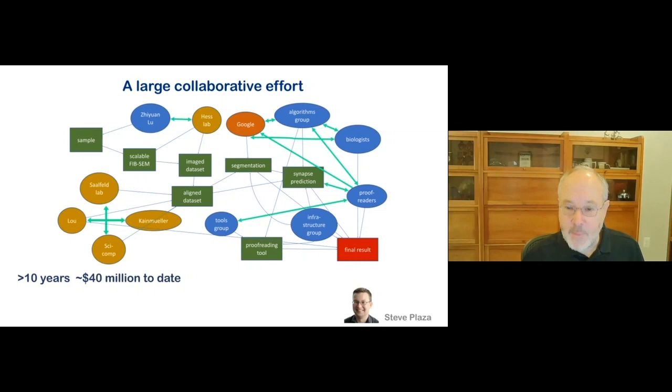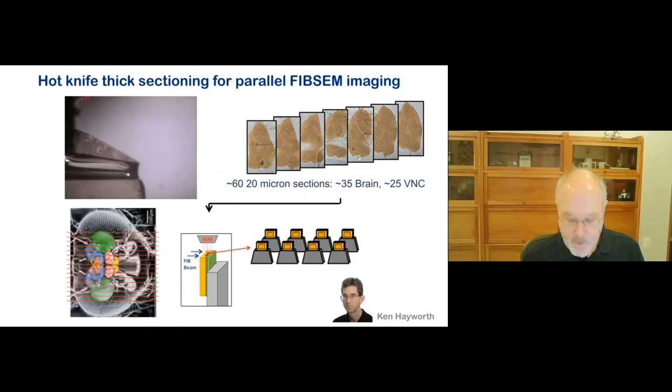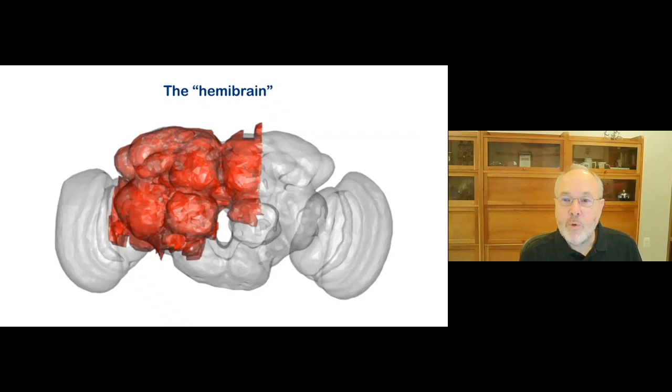It required patient funding and it was not inexpensive, even without putting the dollar figure on Google's contribution. So this was big science, both in the amount of time, the amount of people, and the budget. For imaging, the brain needed to be sliced like a loaf of bread into 20 micron sections, which could then be imaged in parallel, using a method developed by Ken Hayworth.